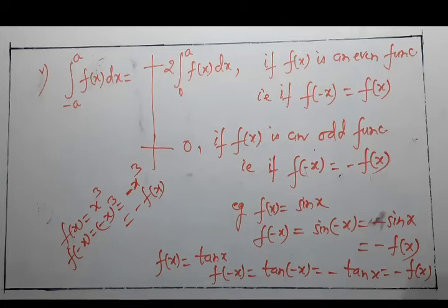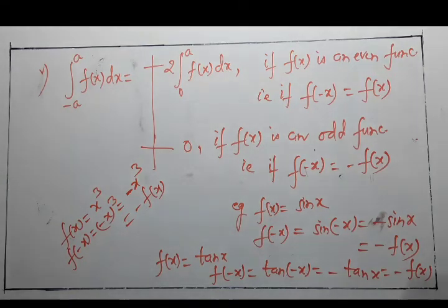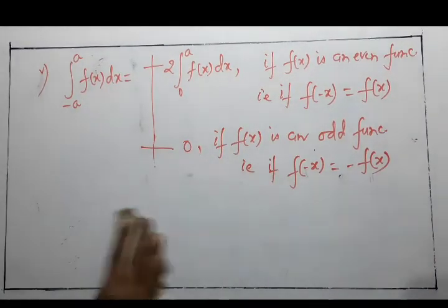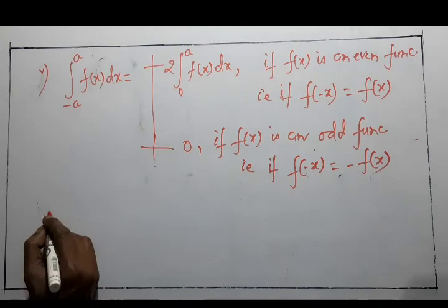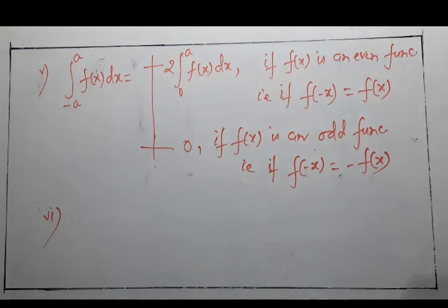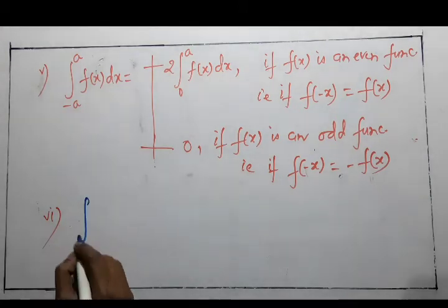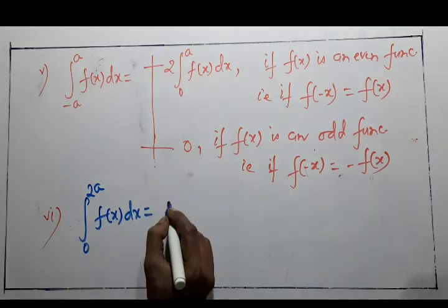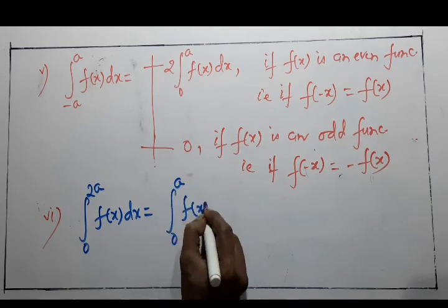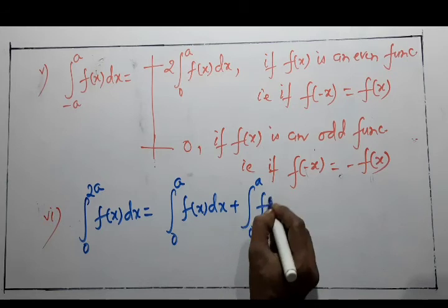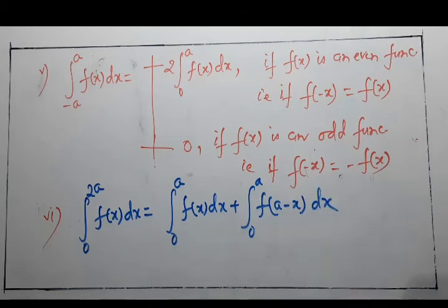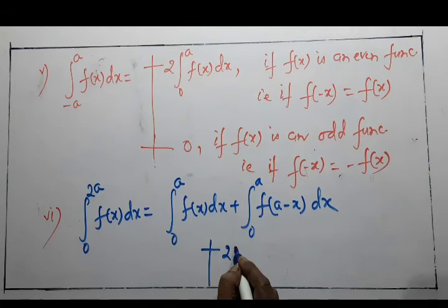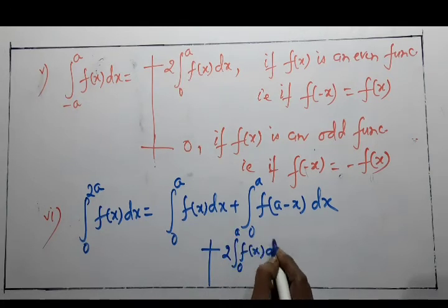Property 6: ∫(0 to 2a) f(x) dx = ∫(0 to a) f(x) dx + ∫(0 to a) f(2a − x) dx. This further simplifies to 2∫(0 to a) f(x) dx if f(2a − x) = f(x), and equals 0 if f(2a − x) = −f(x).